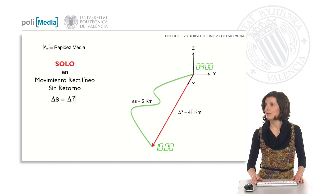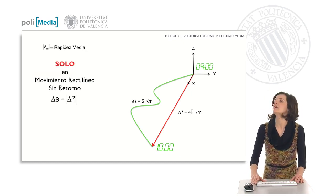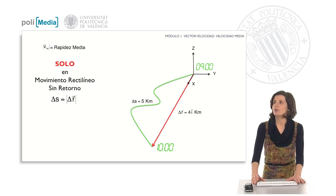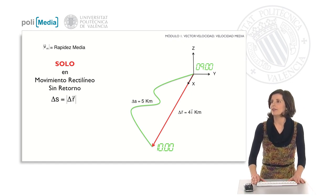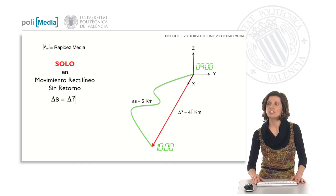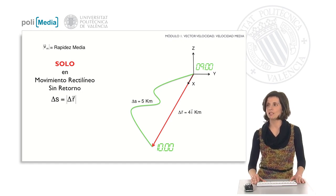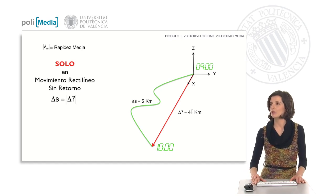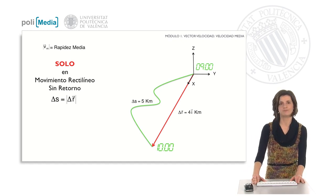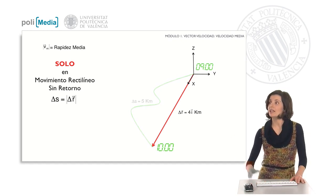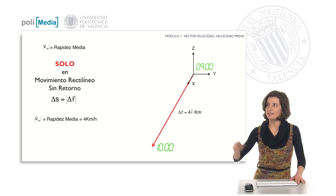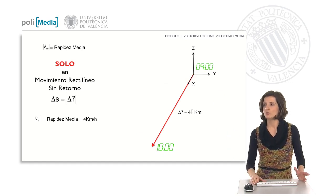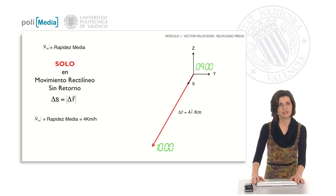The modulus of the average velocity does not always coincide with the average speed — only if the motion is rectilinear and without return. Only in that case, as we saw in the previous class, does the increment of s coincide with the modulus of the displacement vector. If Jay and Amanda had gone in a straight line to the basketball court, their average speed and velocity would both have been 4 kilometers per hour.